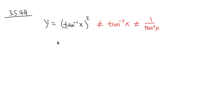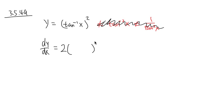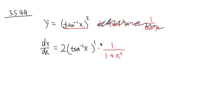Let me write it as dy/dx. I have something to the second power, so I have to use the power rule first. So: 2 times the inside to the first — inverse tangent x — stays the same for now. Then you look at what's the inside and multiply by the derivative of the inside because of the chain rule, which gives you 1 over 1 plus x squared.